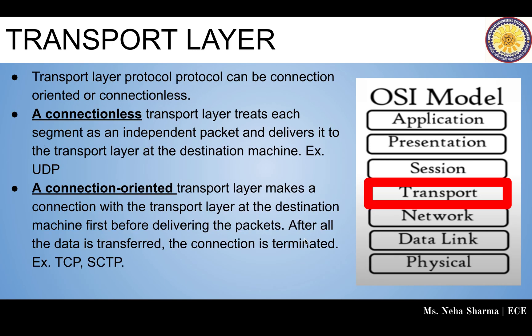Your transport layer protocol can be connection-oriented or connectionless. A connectionless transport layer treats each segment as an independent packet and delivers it to the transport layer at the destination machine — for example, UDP is a connectionless protocol. A connection-oriented protocol makes a connection with the transport layer at the destination machine first before delivering the packets. After all the data is transferred, the connection is then terminated. Examples of this are TCP and SCTP protocols.